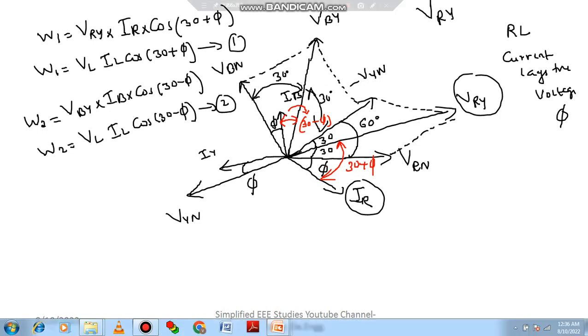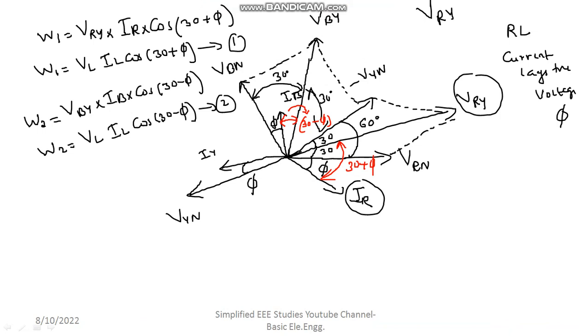By considering equation number 1 and 2, let me elaborate the total power. Total power is equal to W1 plus W2. Here, VLIL is a common term. So let me take VLIL outside. VLIL into cos 30 plus φ plus cos 30 minus φ. That means VLIL into, please elaborate.